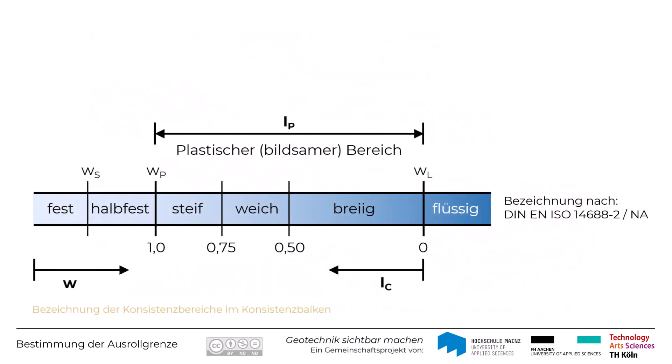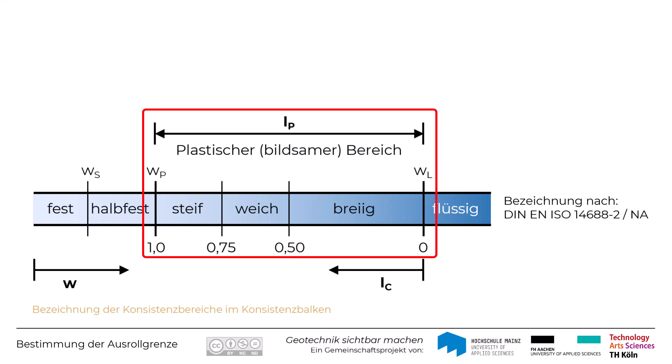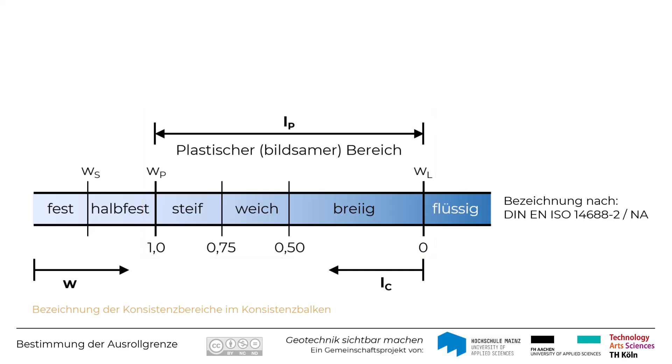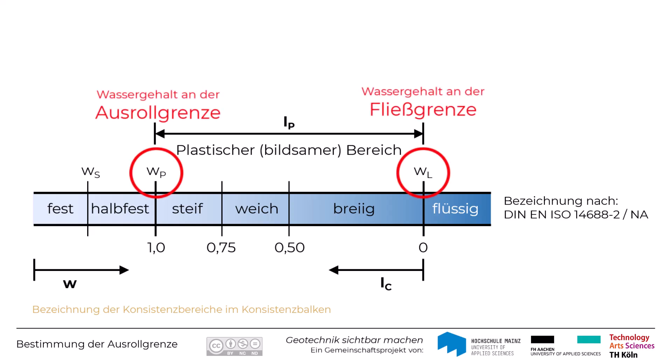Der Bereich an Wassergehalten, in denen sich ein Boden plastisch verhält, wird als sogenannter plastischer Bereich bezeichnet und ist durch zwei Grenzen definiert: den Wassergehalt an der Fließgrenze, WL, und den Wassergehalt an der Ausrollgrenze, WP. Diese Grenzen sind für jeden feinkörnigen Boden spezifisch und erlauben es, ihn nach Norm zu klassifizieren.